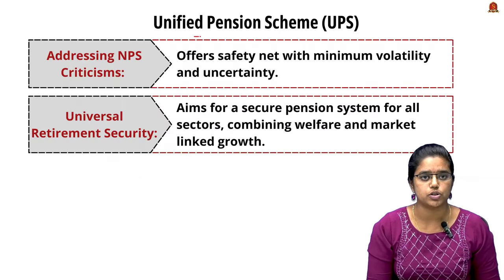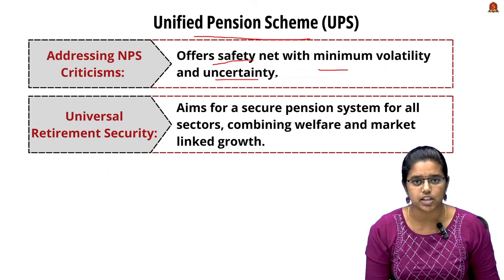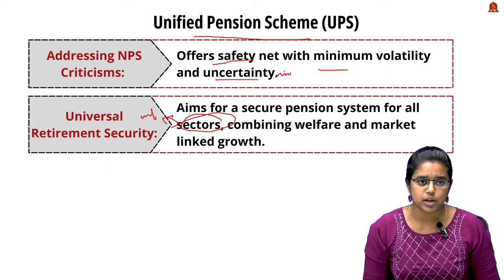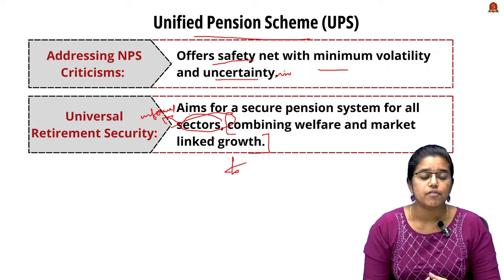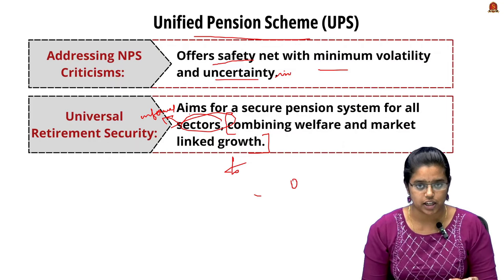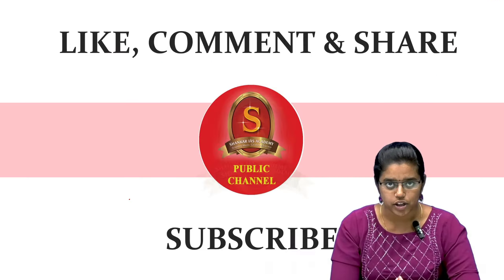An important additional feature of the UPS is that it offers a safety net by providing a minimum pension amount even in volatile or uncertain market conditions. It aims to secure a pension for all sectors, including informal workers. The UPS combines welfare and market-linked growth, addressing issues from both the OPS and the NPS, and concludes the discussion on this editorial.